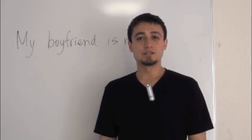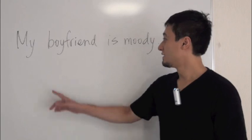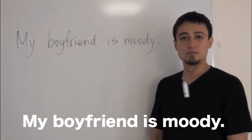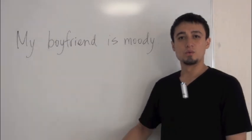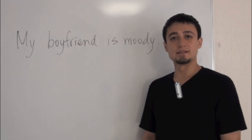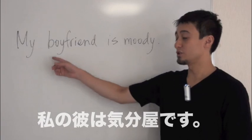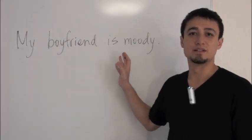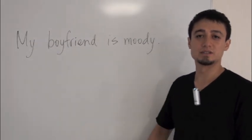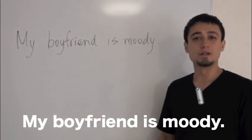英語、一日一言。では答えです。答えは「My boyfriend is moody.」私の彼氏は気分屋です、という意味です。「私の彼はムードがあります」ではありません。じゃあ一度発音やりましょうか。My boyfriend is moody.